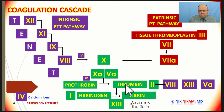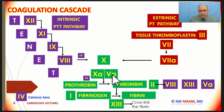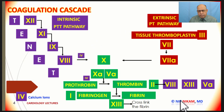Another interesting point: thrombin is one of the most thrombogenic substances in the body. Thrombin not only converts fibrinogen into fibrin, it also activates factor 8, factor 13, and factor 5a. This is the common pathway of the coagulation cascade for both intrinsic and extrinsic pathways.